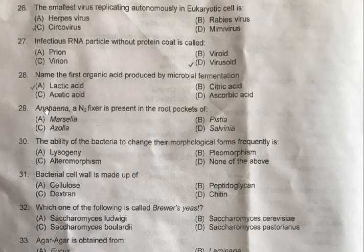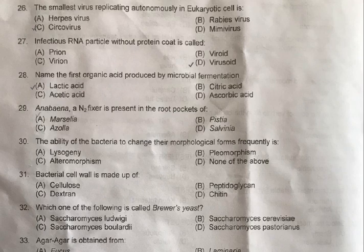Question 29: Arabiana, a nitrogen fixer, is present in the root pockets of — A: Marsalia, B: Pistia, C: Azola, D: Salvenia. The correct answer is C, Azola. The cyanobacterium Anabaena azolae is found in the pockets of leaves of the Azola fern, which is found in paddy fields.